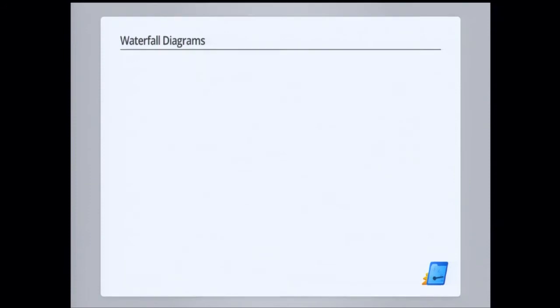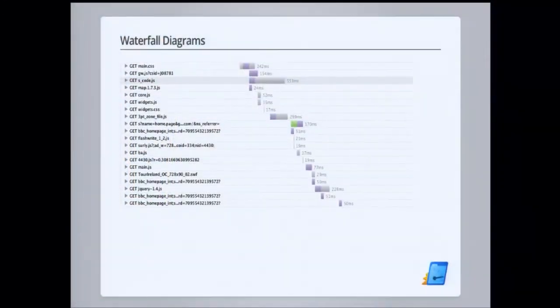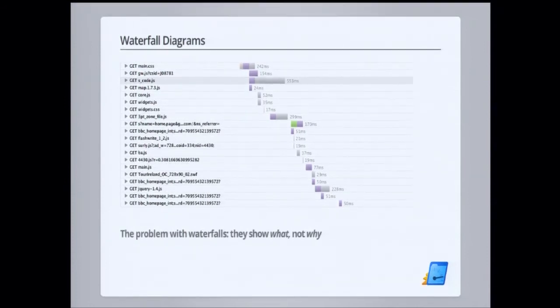We are always looking for new ways to help web developers optimize their sites, looking at old tools and new tools. One of the most core tools in the developer's toolbox is the waterfall diagram. I'm sure all of you are familiar with it. This is a really great tool. It tells us what resources were loaded, when they were loaded, what order they were loaded in, and how long it took to load each one. But there's one critical thing missing: it tells us what happened, but not why it happened. Understanding why there's a problem in your waterfall diagram is just as important, if not more important, to understanding and fixing the problems.